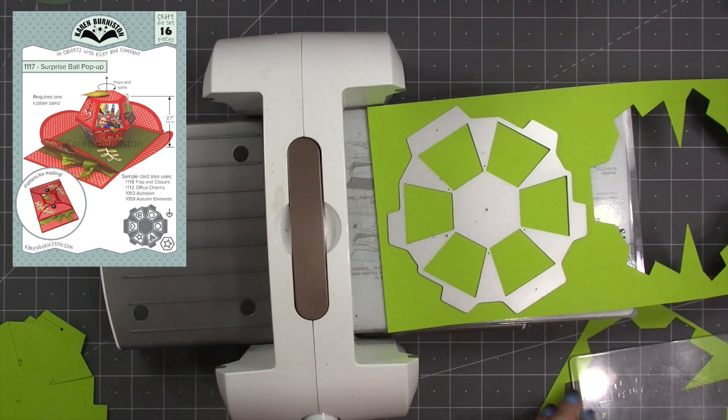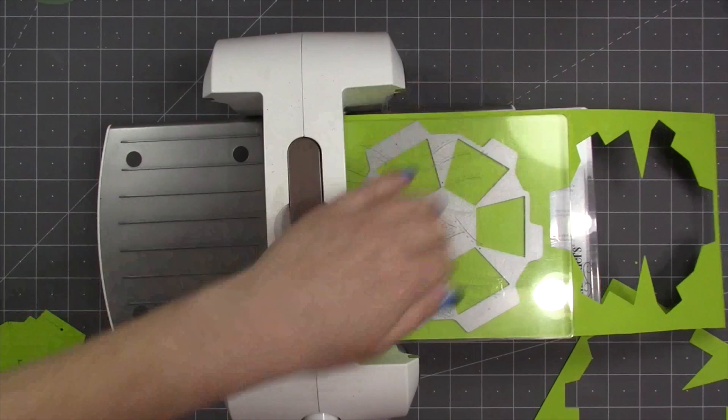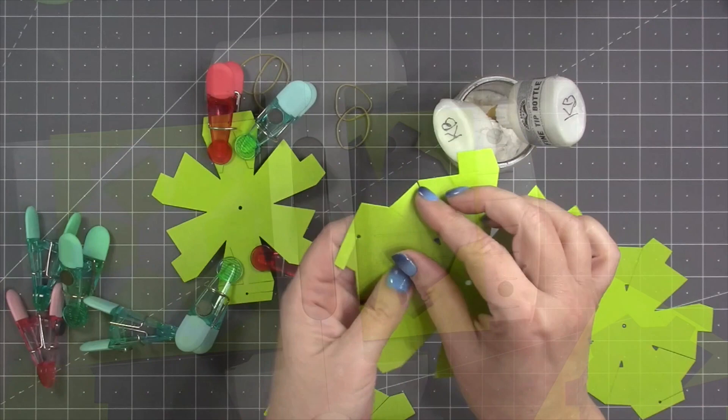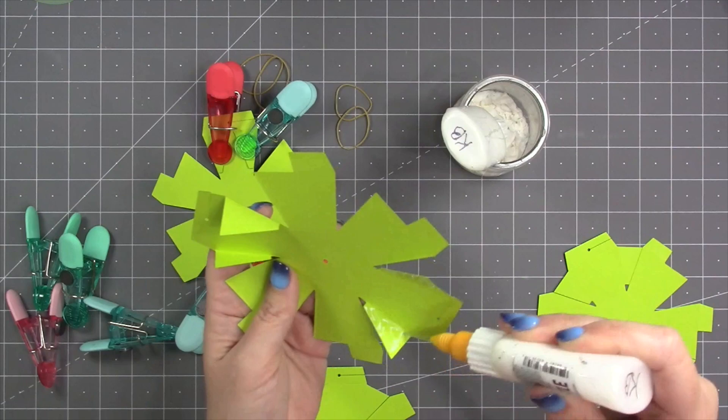I'm going to start out by die-cutting and assembling two of the surprise ball pop-ups out of green cardstock. You can use any die-cutting machine that can accommodate a wafer-thin die, and today I'm using my Spellbinders Platinum 6.